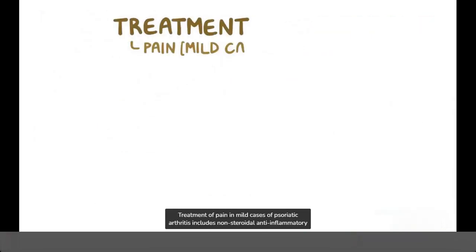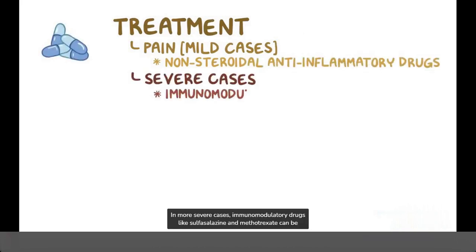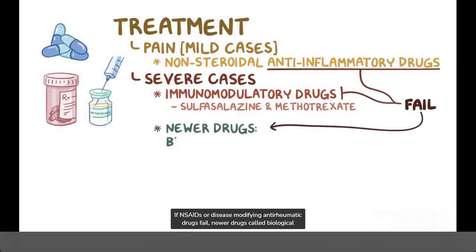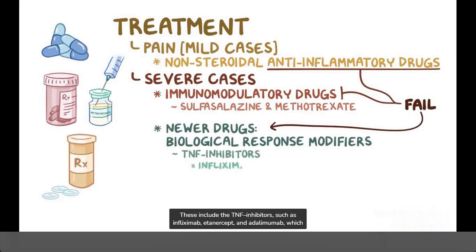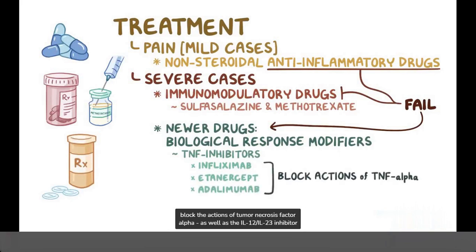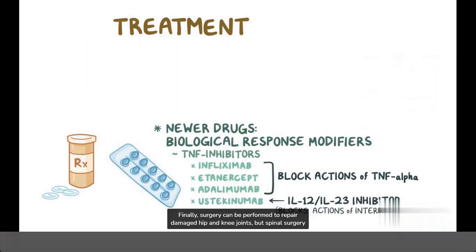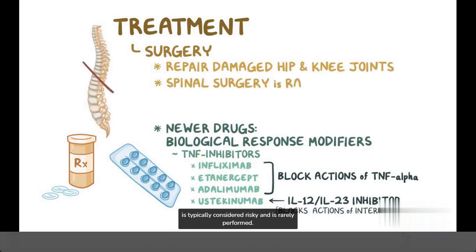Treatment of pain in mild cases of psoriatic arthritis includes non-steroidal anti-inflammatory drugs. In more severe cases, immunomodulatory drugs like sulfasalazine and methotrexate can be helpful. If NSAIDs or disease-modifying anti-rheumatic drugs fail, newer drugs called biological response modifiers can be used. These include the tumor necrosis factor inhibitors, like infliximab, etanercept, and adalimumab, which block the action of tumor necrosis factor alpha, as well as the interleukin-12-interleukin-23 inhibitor ustekinumab, which blocks the actions of the interleukins. Surgery can be performed to repair damaged hip and knee joints, but spinal surgery is typically considered risky and is rarely performed.